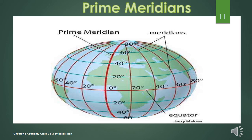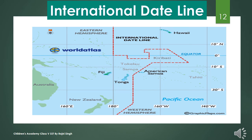Meridians east of the prime meridian are marked with capital E, and meridians to the west are marked with capital W. The meridians of 180° East and 180° West form the same line, known as the International Date Line, which is used to maintain standard time worldwide.